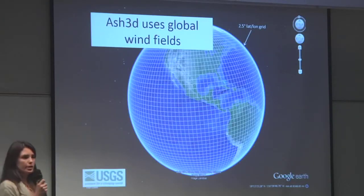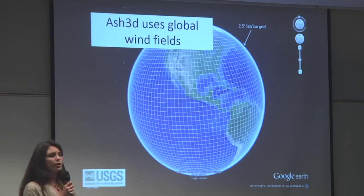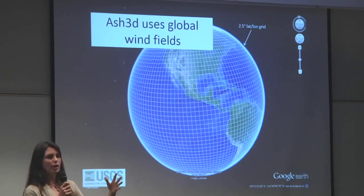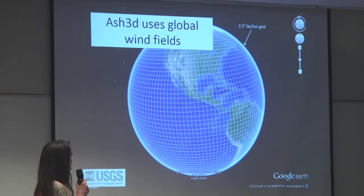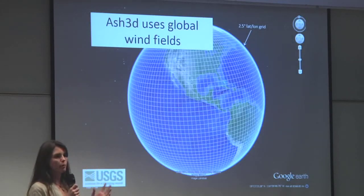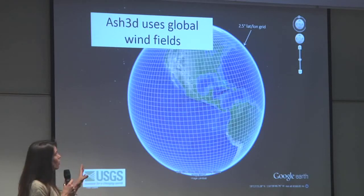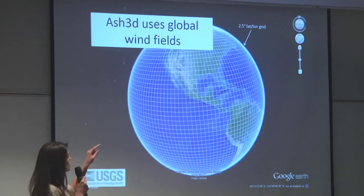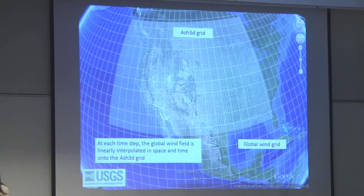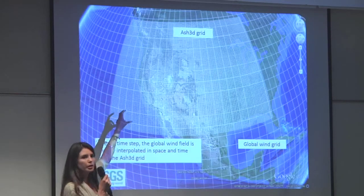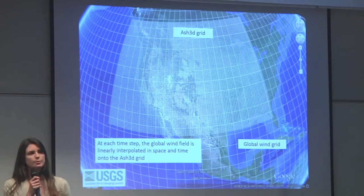As for the wind field used to initialize the model — once the volcanic ash cloud moves a certain distance from the vent, it primarily becomes a meteorological phenomenon, so the global winds become really important. The model interpolates from a global wind field at 2.5 degrees resolution provided by NOAA NCAR reanalysis with twice-daily updates. That global wind field on the coarser grid is interpolated linearly onto the finer mesh of your prescribed simulation area.